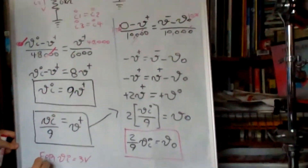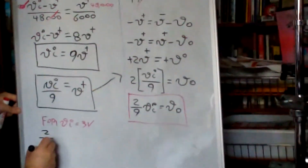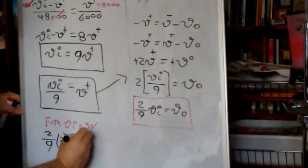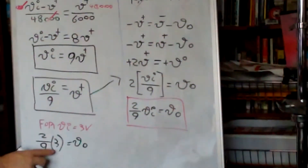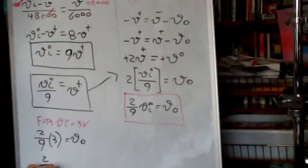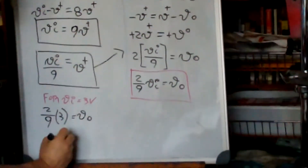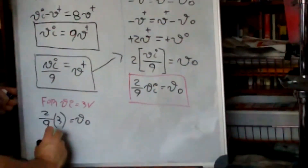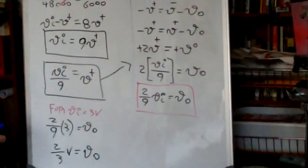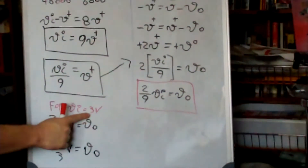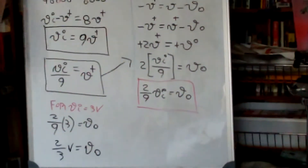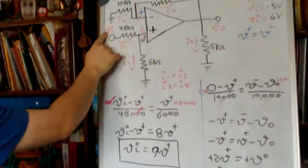For V input equal to 3 volts, we plug into the equation: (2/9) times 3 equals V out, so V out equals 2/3 volts. When the input is 3 volts, the output is 2/3 volts.